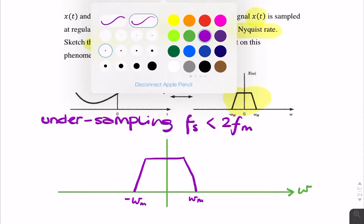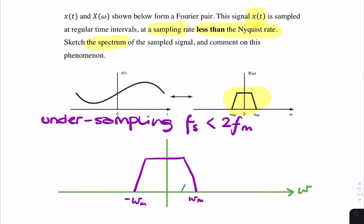Then the spectrum repeats. So let me use a different colour here. It will repeat once, and then twice. And it will repeat an infinite number of times. But we notice that the spectra overlap because we have undersampling.